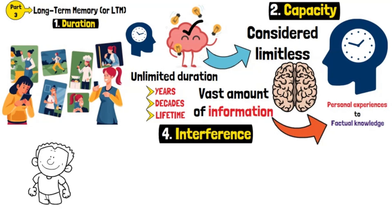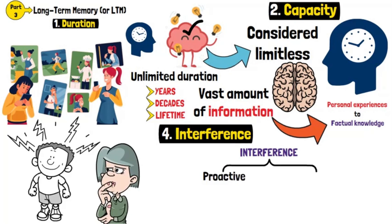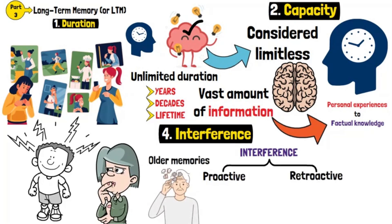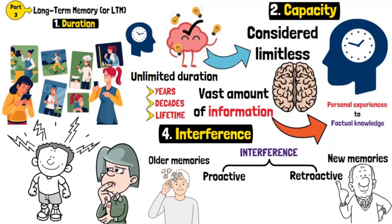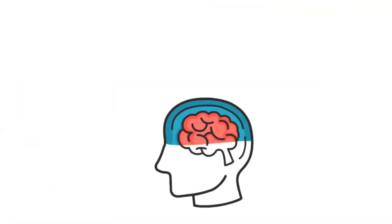In long-term memory, interference can affect the retrieval of stored information. Interference comes in two types: proactive, when older memories interfere with the recall of newer ones, and retroactive, when new memories disrupt the recall of older ones. This is why it's harder to remember a new password after years of using an old one.